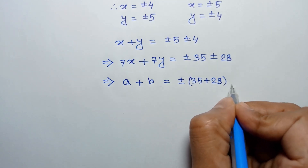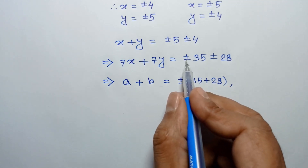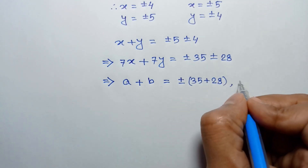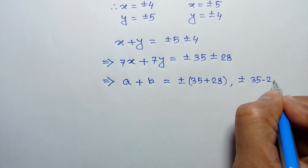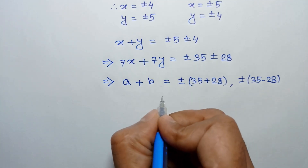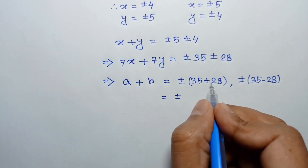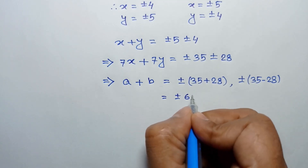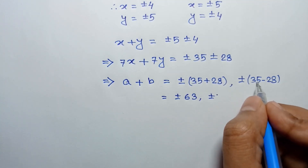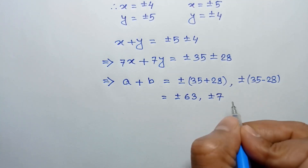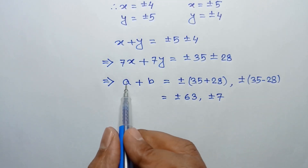For the opposite sign case, we have plus or minus 35 minus 28. So A plus B equals plus or minus 63, or plus or minus 7. This is the value of A plus B.